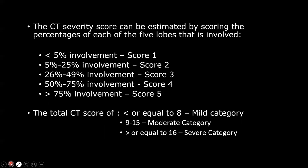If lung involvement is less than 5%, the score is 1. From 5 to 25% involvement, the score is 2. From 26 to 49%, the score is 3. From 50 to 75%, the score is 4. And more than 75% involvement is score 5. A total score of 8 or less is mild, 9 to 15 is moderate, and 16 or more is severe.